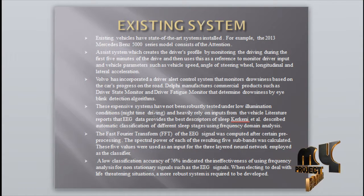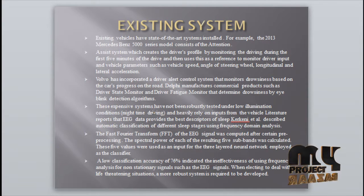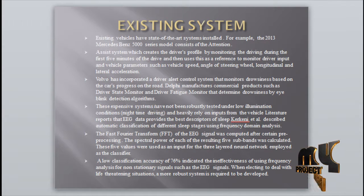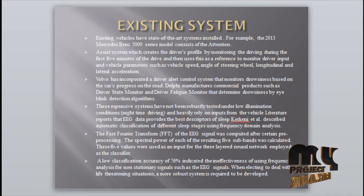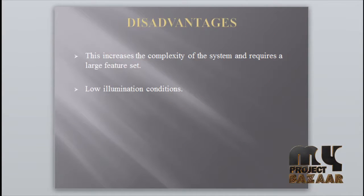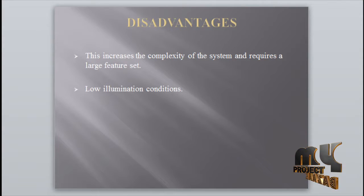The literature reports that EEG data provides the best descriptor for classifying different sleep stages using frequency domain analysis. The Fast Fourier Transform of EEG signals was computed after pre-processing, and spectral power of each of the five sub-bands was calculated. However, classification accuracy was low at 76%, and the system had disadvantages including increased complexity with a large feature set and poor performance under low illumination conditions.